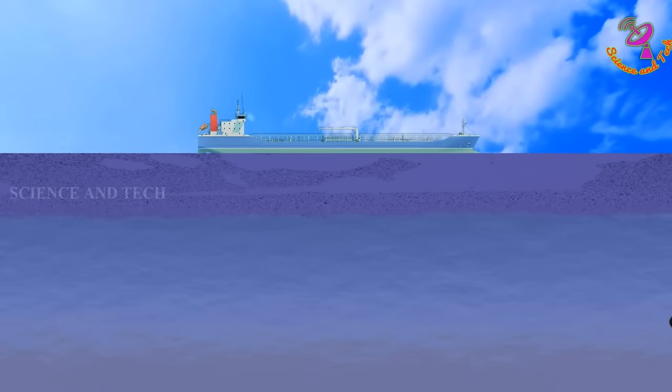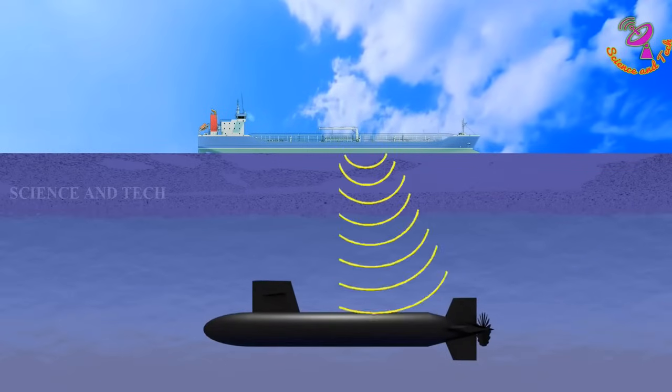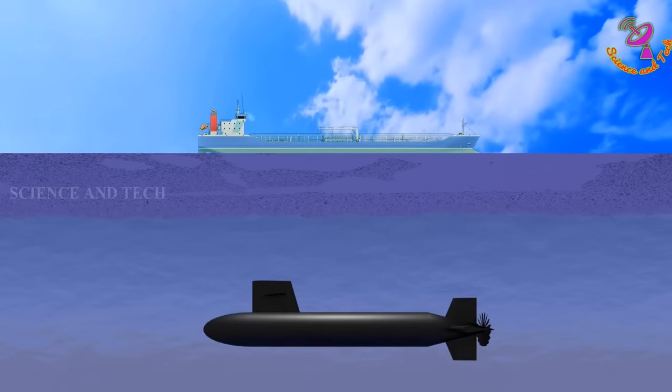From this sound echo, sonar will identify the size of the object. The amount of time taken by sound waves to travel from the device to the detected object is calculated to measure the distance. From this data, a sonar device will analyze the size, distance, direction, and type of object.